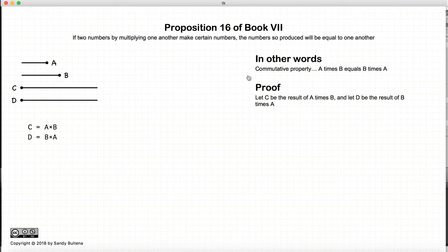So let's start with having c equal to a times b and d equal to b times a. And then what we're going to do is we're going to prove that c and d are equal.